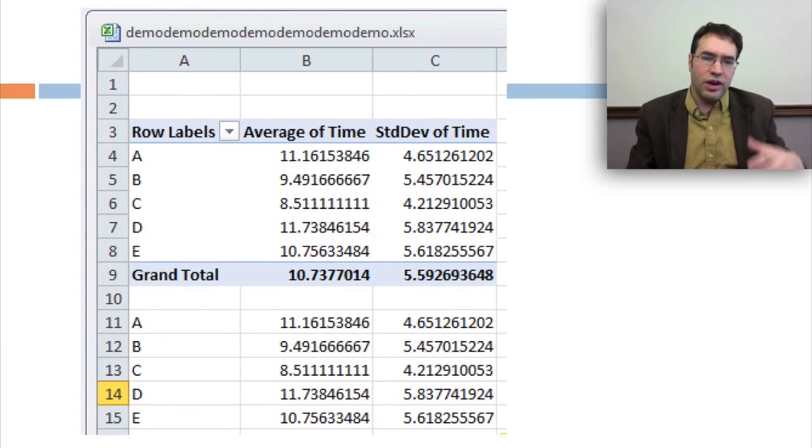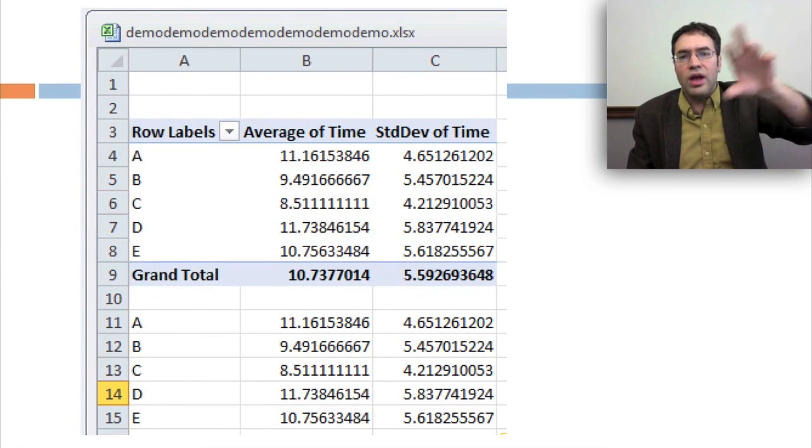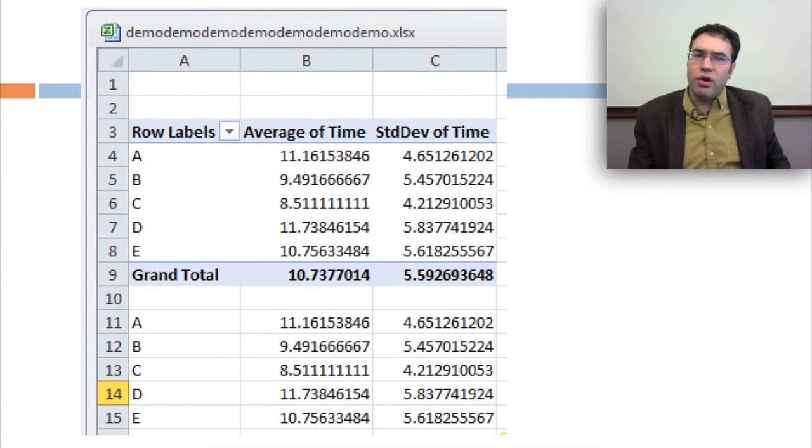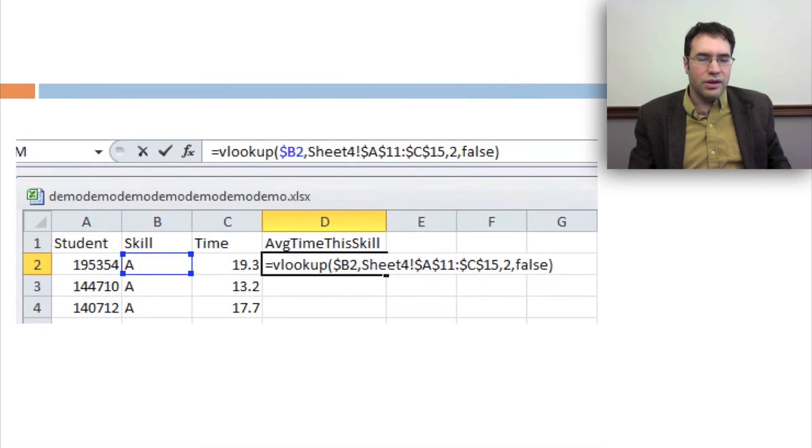Now we have two copies of our data, one in the pivot table, one outside. This is important because you can't and probably don't want to do a VLOOKUP on a pivot table itself. Then we go back to the original spreadsheet and we do a VLOOKUP.